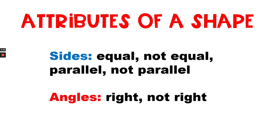Attributes of a shape. If you were to describe a shape, you might describe its sides as equal or not equal, parallel or not parallel. Another attribute of a shape is its angles. The angles can be right angles or not right angles.